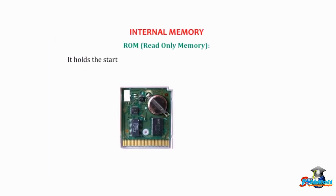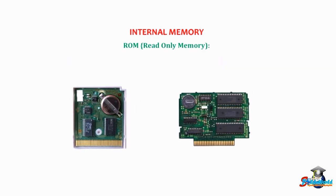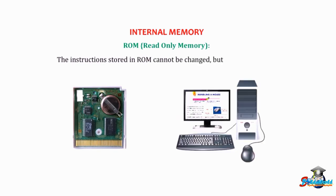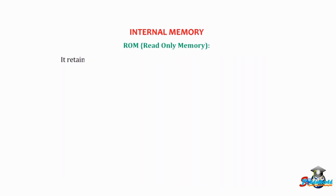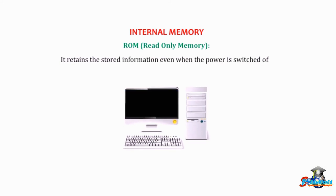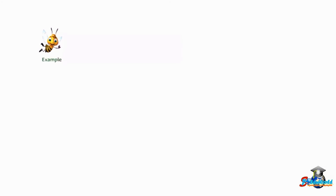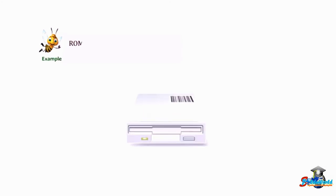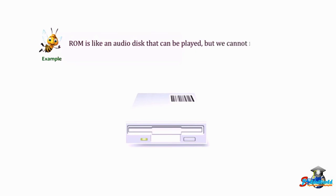ROM — Read Only Memory — holds the startup instructions that prepare a computer for use. The instructions stored in ROM cannot be changed but can only be read. It retains the stored information even when the power is switched off. For example, ROM is like an audio disc that can be played but we cannot record anything on it, except in a few selected circumstances.